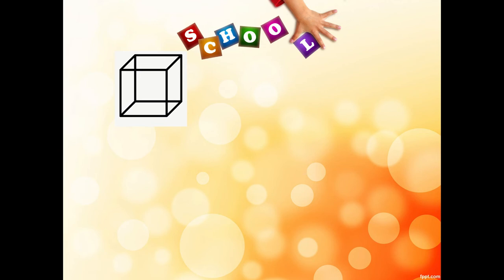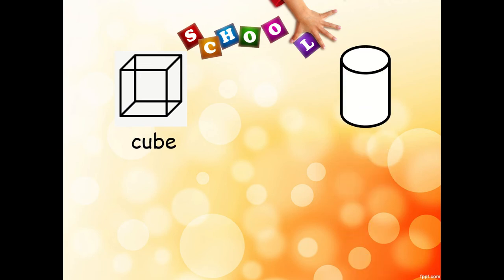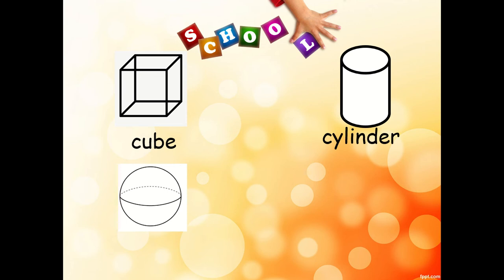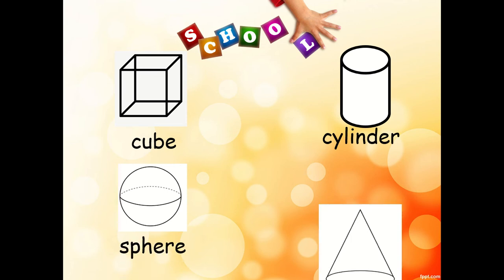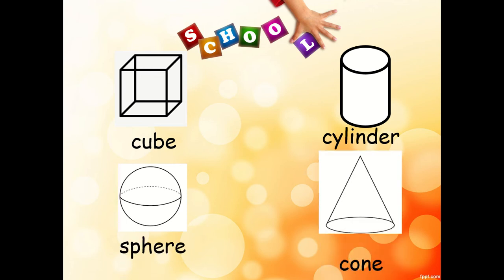What is this again? This is a cube. This one is? Yes, a cylinder. How about this solid figure? It is a sphere and a cone. Very good KG.